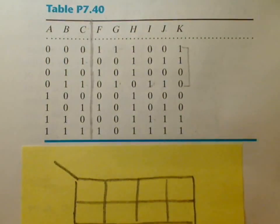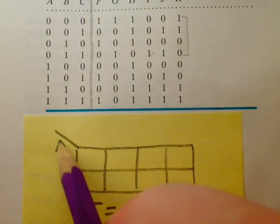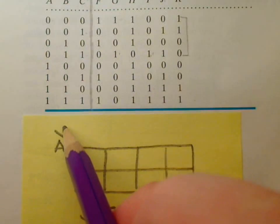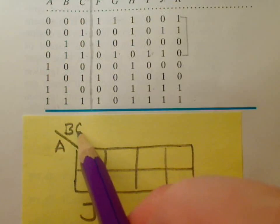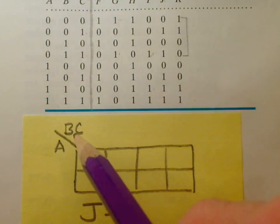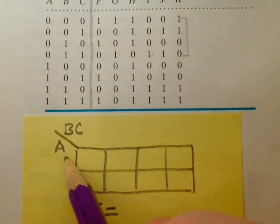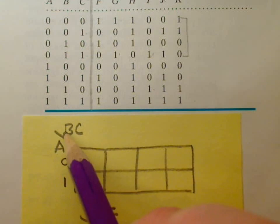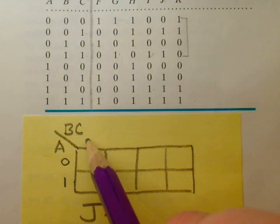We're going to use a Karnaugh map for this, and one of the axes of this Karnaugh map is going to be A. The other axis is going to be B and C. Then we can label zero and one for the possible values of A, and the possible values of B, C go like this.